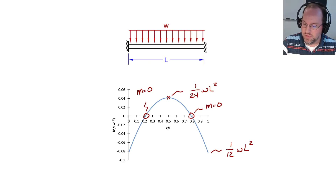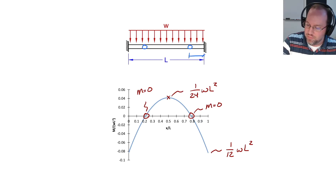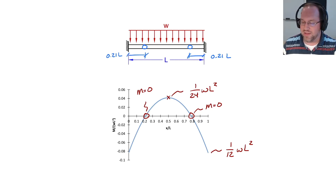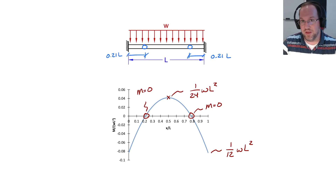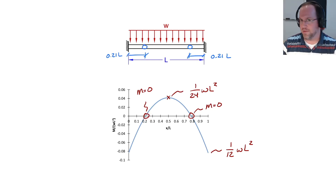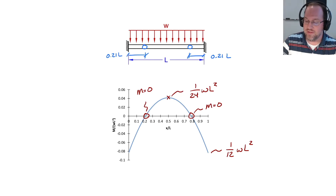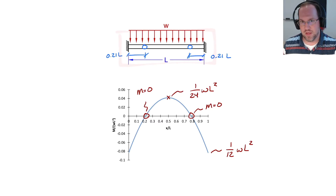For example, if I look at these two inflection points and put a hinge at each one — roughly 0.21 times the span length from each end — analyzing this system with those hinges should give approximately the same answer as without them. Adding hinges at locations of zero moment does not change the results. However, knowing those points does help because now the system is determinate and I can solve it.